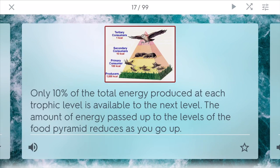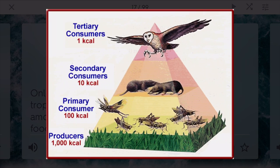The 10% rule is derived from thermodynamics and states that only 10% of the total energy produced at each trophic level is available at the next trophic level. So the amount of energy passed as you go up the food pyramid is reduced. At the bottom you have producers with a lot of calories produced, but by the time you get up to the tertiary consumers they only have a little bit — which is also kind of bad for humans since we're at the top and have to eat a lot to meet our energy needs.